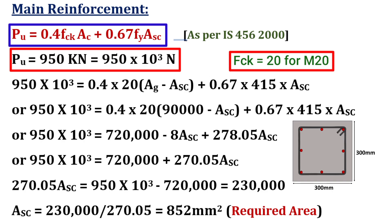Fck is the grade of concrete, which is given as 20. Ac is the area of concrete. Fy is given as 415 and Asc is the area of steel.